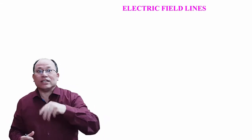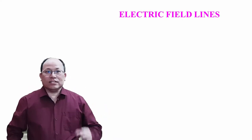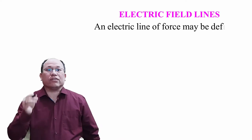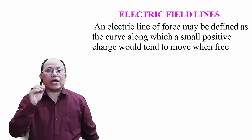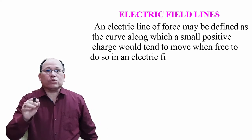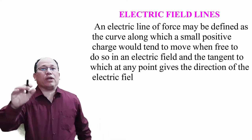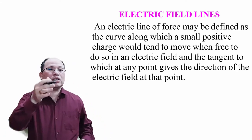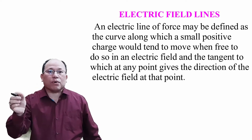Hope you are not getting bored — we have lots of topics to study. Let's come to the next topic: electric field lines. An electric field line is similar to magnetic field lines studied in class 10. An electric line of force may be defined as the curve along which a small positive charge would tend to move when free to do so in an electric field, and the tangent to which at any point gives the direction of the electric field at that point.